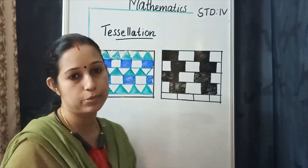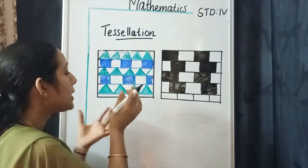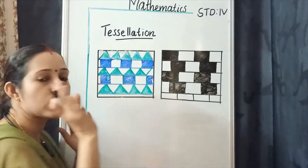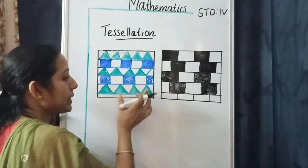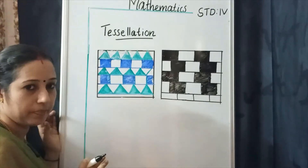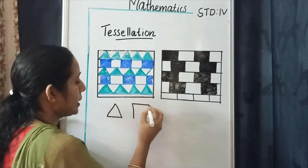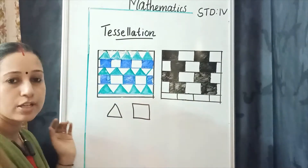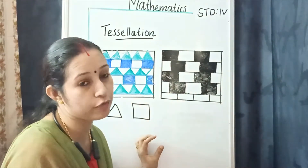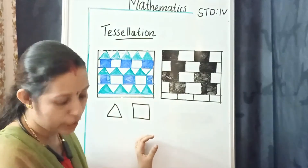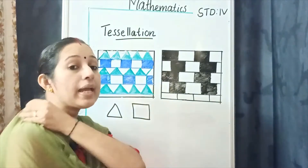In the first tessellation, two shapes are repeating — a triangle and a square. The shape or group of shapes that repeats in a tessellation is called the basic shape. So the basic shapes of this tessellation are triangle and square.